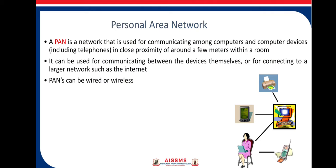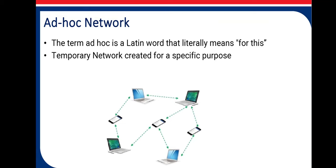PAN communicates over a short range. A common example is a wireless network that connects a computer with different peripherals. PAN can be wired or wireless. Next is the ad-hoc network, which is a temporary network where a connection is created for a specific purpose. The term ad-hoc is a Latin phrase meaning 'for this purpose.'